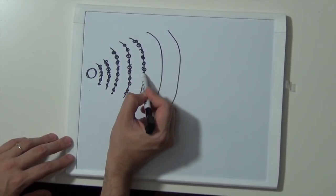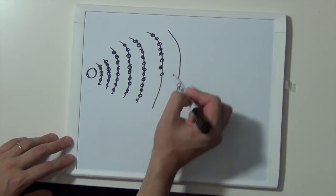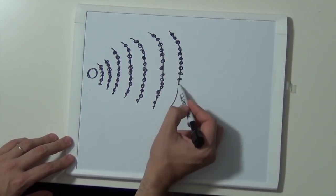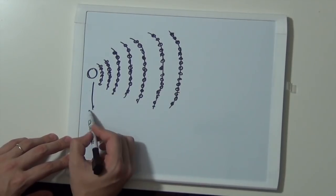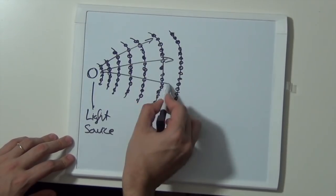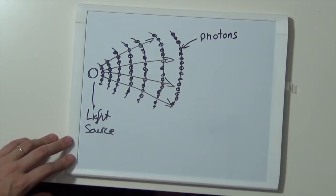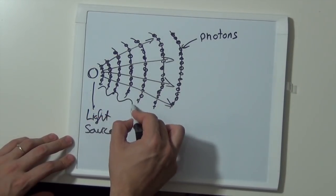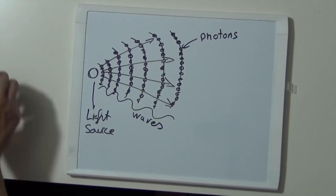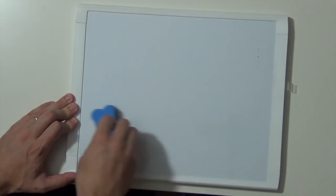Photons travel in a flow, just like rain, but they travel from the source in all directions — not just one direction like rain falling from the sky. They travel as a flow but in waves, just like the water waves in a lake when you throw a rock and you see those circles — but the waves are spherical, not just in one plane. There are also light sources that travel in one direction just like rain, but those are lasers, and we're not going to get into that.